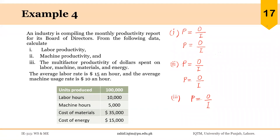Let's solve another example of productivity calculation. An industry is compiling the monthly productivity report for its board of directors. From the following data, calculate labor productivity, machine productivity, and the multi-factor productivity of dollars spent on labor, machine, materials and energy. The average labor rate is $15 an hour and the average machine usage rate is $10 an hour. So the labor and machine input is given as hours as well as dollar value.